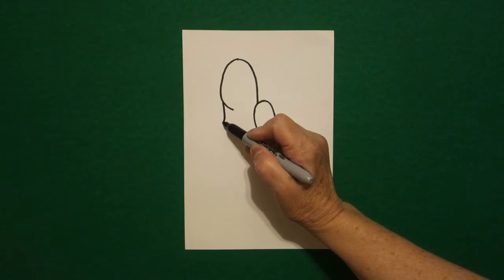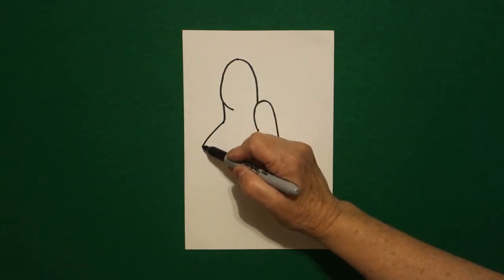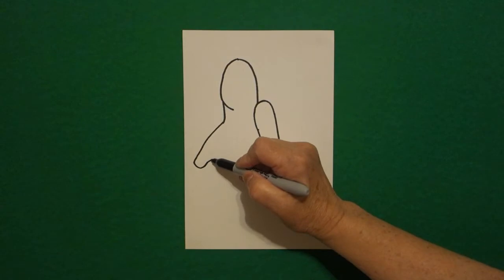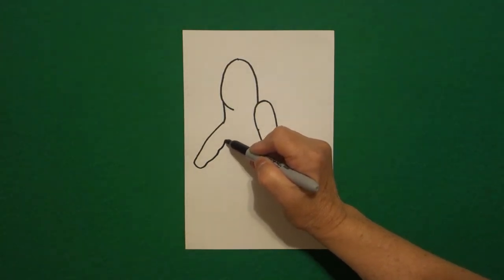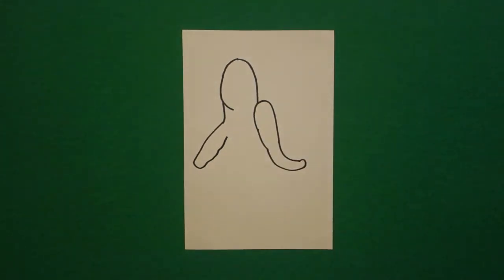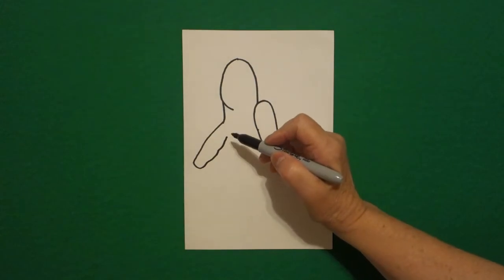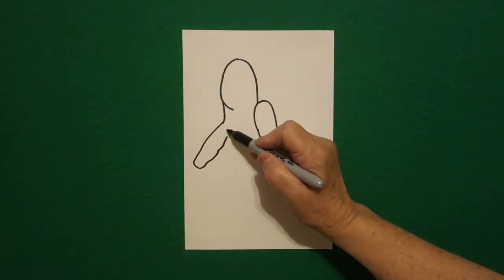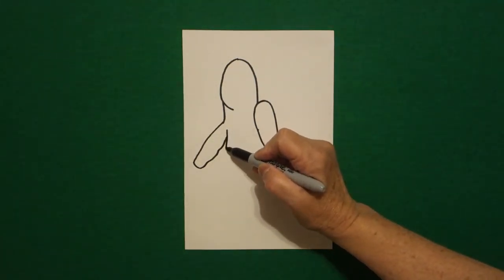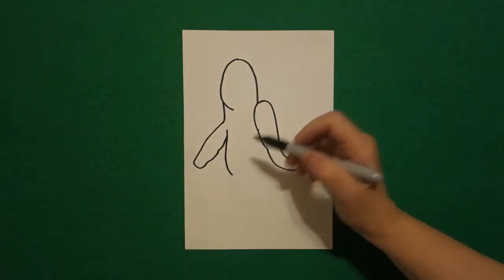Continue the curved line down, around, up, up, and leave that floating. Come right about here, above that line, and we're just going to draw a slightly curved line down.